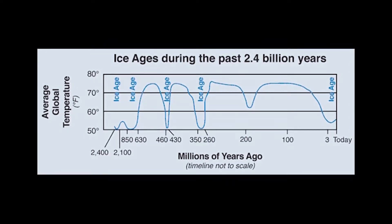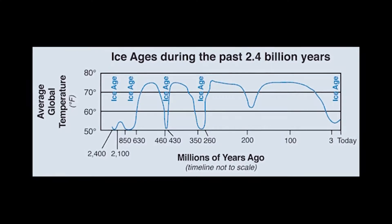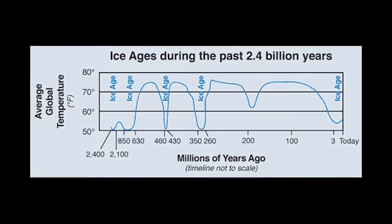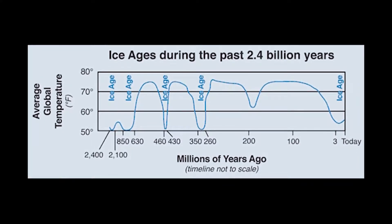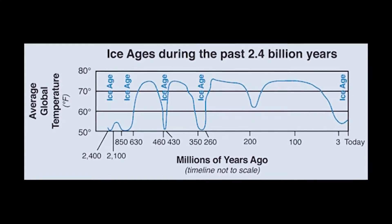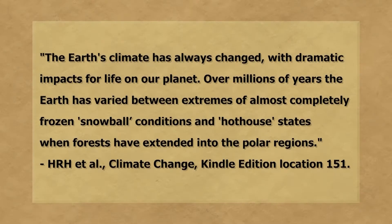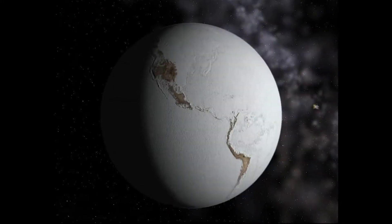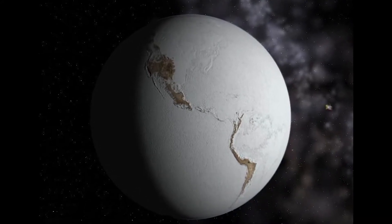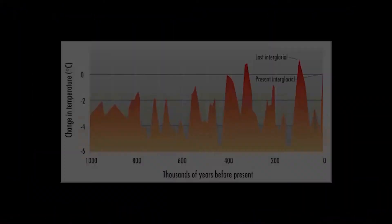Nobody who has the Al Gore vision can explain this, and the way they deal with it is not to talk about it. At least Prince Charles does sometimes refer to things that happened millions of years ago, and he touches on the snowball Earth, which is actually hundreds of millions of years ago, well before the Cambrian explosion. But Al Gore never gets us back out of the Pleistocene — that is to say, the Ice Age of which the Holocene is an intermission.